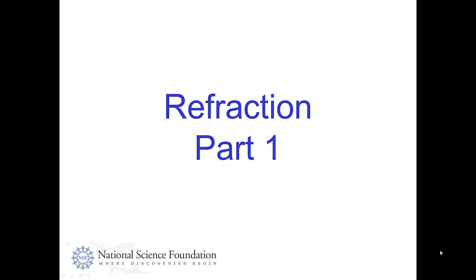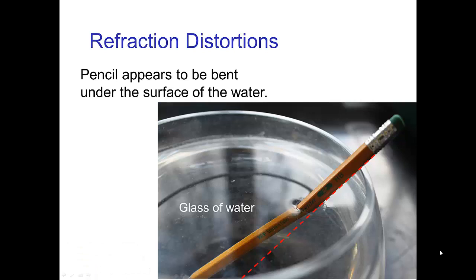Refraction Part 1. I suggest that you go to the kitchen, pour yourself a glass of water, and take a pencil and look at what it looks like when you dip it in the water — or a knife or something straight. You'll see that underwater the pencil appears as if it's bent, as you see in this photo. There's clearly some kind of distortion in the optics due to the fact that you're seeing part of the pencil in the air and part of the pencil underwater.